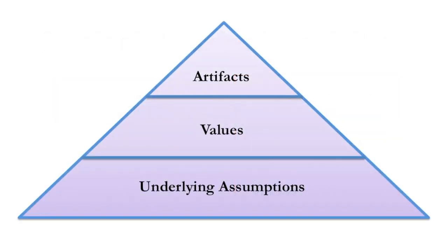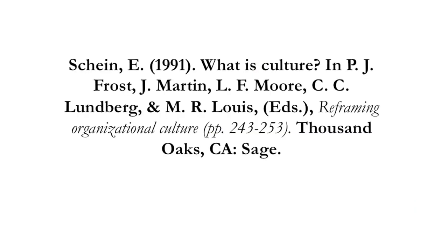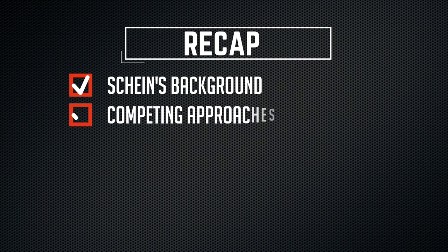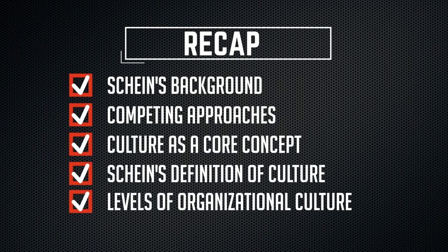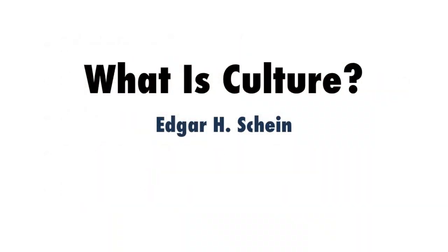Those are the three levels of culture most people come away with when they read Schein's writings: artifacts, values, and underlying assumptions. If I had to rank this article, it's in the top 10, probably even top 5, organizational communication-style articles written on culture. It's cited by just about every author who has ever written on culture recently, and for good reason — Schein delivers things in a very clear way with a level of sophistication, even though he's incredibly concise when writing about culture. I highly recommend it. Thanks, and I'll see you next time.